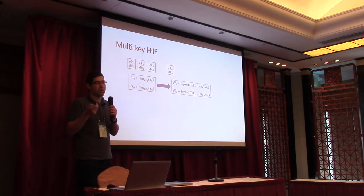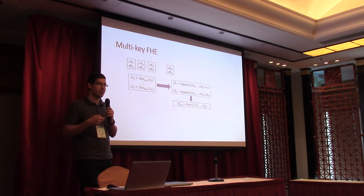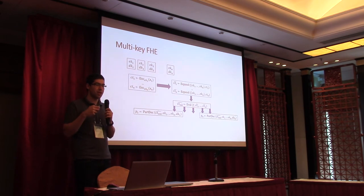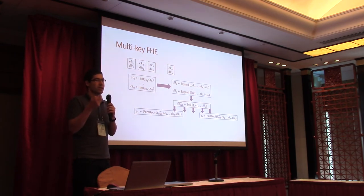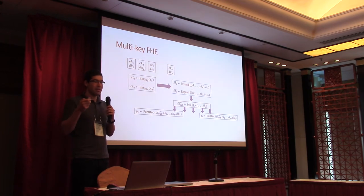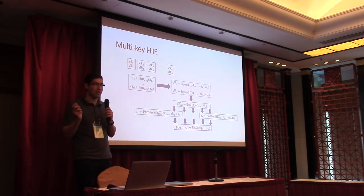Once we have all the ciphertexts under the same key, we can do any homomorphic operation we want. We take the sequence of ciphertexts, perform some homomorphic operation, and get a ciphertext of the evaluated value. Then we can do partial decryption: each player, using only its decryption key, can peel one layer of the encryption and get a partial decryption. Using all the partial decryptions together, there is a completely public operation called final decryption that takes the partial decryptions and gives you the value — no secret key is needed for that final step.